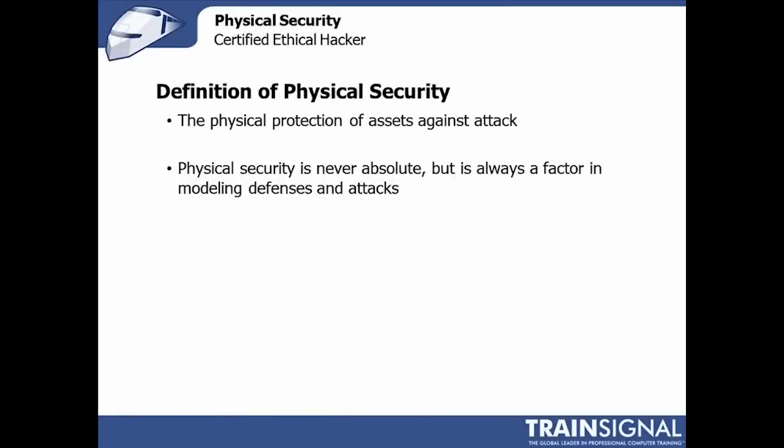The basic definition of physical security is pretty straightforward: the physical protection of assets against attack. This includes some type of physical protection, whether it's a door lock, a chain, a security guard, barbed wire, or a lethal trap where you cover up a bunch of spikes in a hole in the ground with leaves — anything like that would be some type of physical security protecting assets against physical compromise.